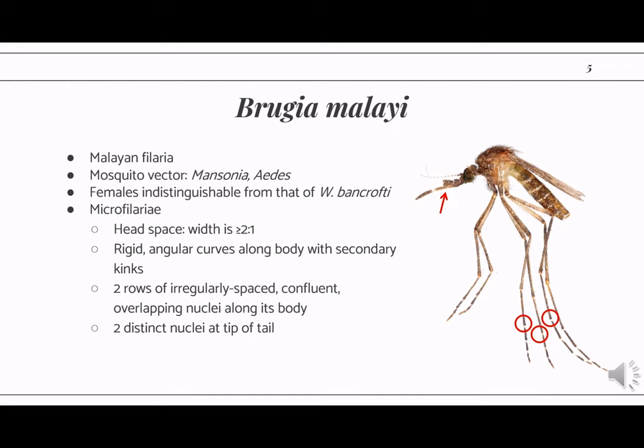At the tip of the tail of the Brugia microfilariae, there will be two distinct terminal nuclei, in contrast with Wuchereria, which does not have terminal nuclei.